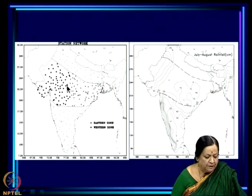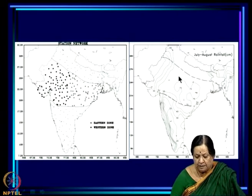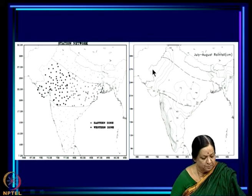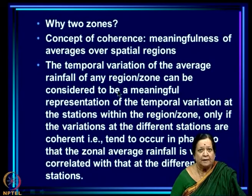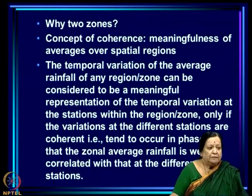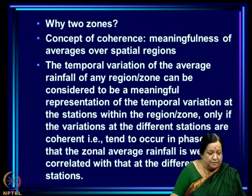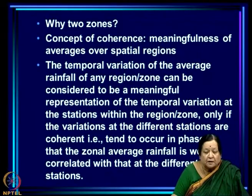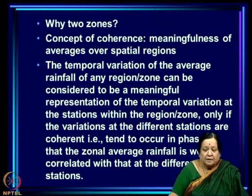What they did was to divide it into two zones: a western zone and an eastern zone. The mean rainfall over the monsoon zone is quite large over the eastern zone but much smaller over the western zone. Now, why did they have two zones? When we are looking at averages over a region, it is a good idea to take a region over which variations of rainfall at individual stations within a region are coherent; otherwise the areal average is not representative.